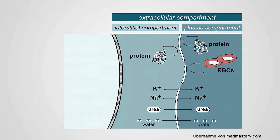The extracellular compartment is divided into interstitial and plasma spaces. The membrane between those two is the capillary wall, and it is highly permeable. Potassium, sodium, nonpolar molecules, and water all cross with very little restriction, while proteins like albumin cannot cross this membrane. Cellular components like red cells, white cells, and platelets are equally restricted from crossing.